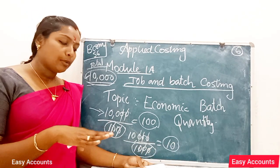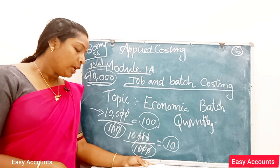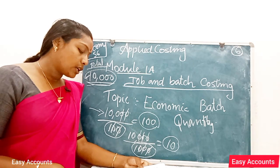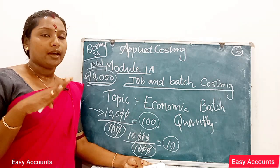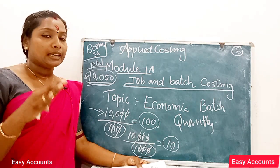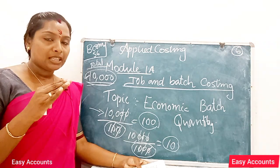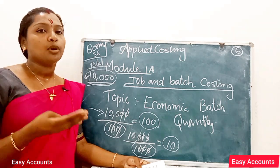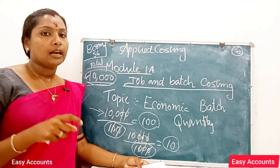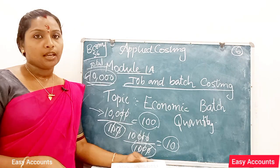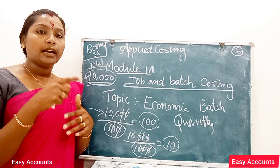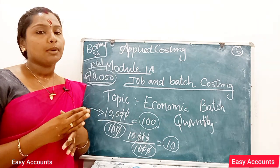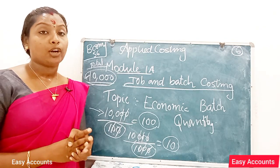The optimum quantity or batch to be produced is that point at which the total of setting up cost and carrying cost is the minimum. At that level, we can produce the product in a batch most economically. This is the economic batch quantity.